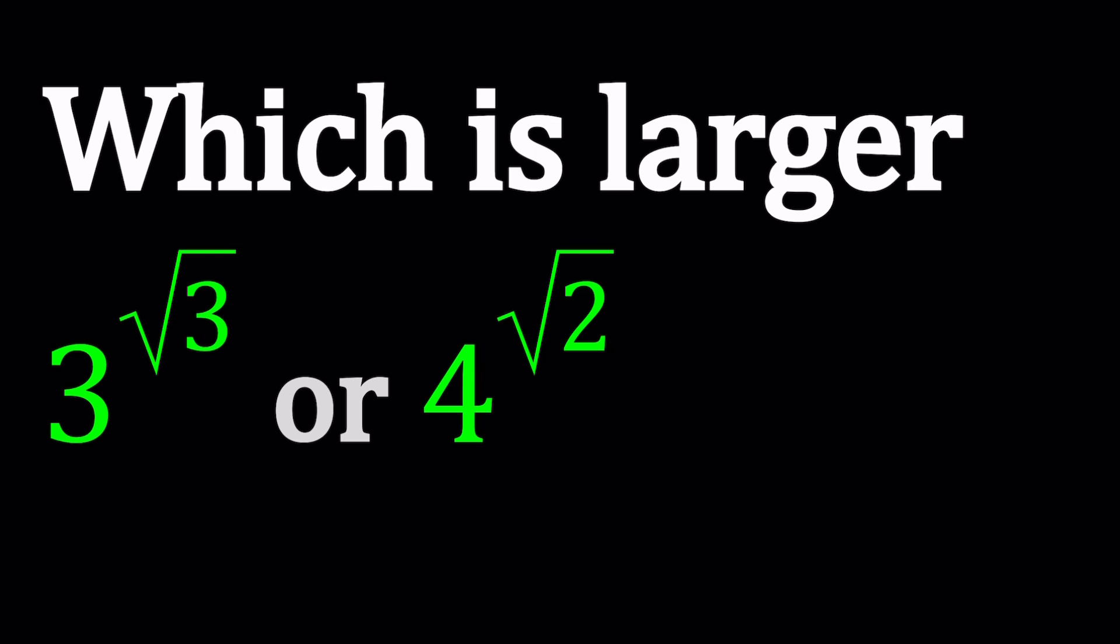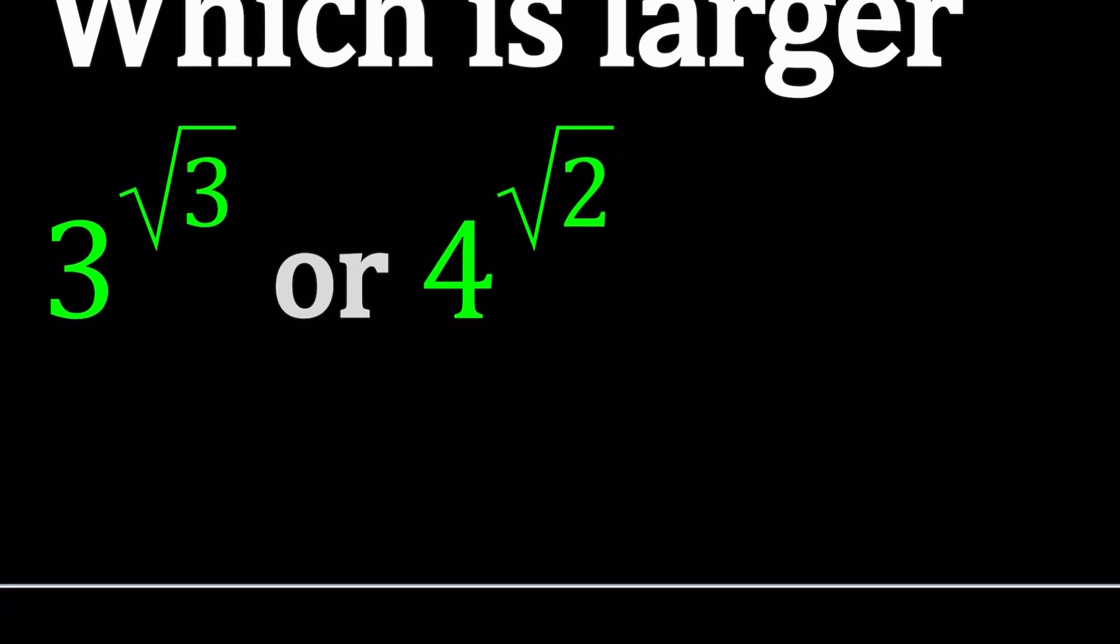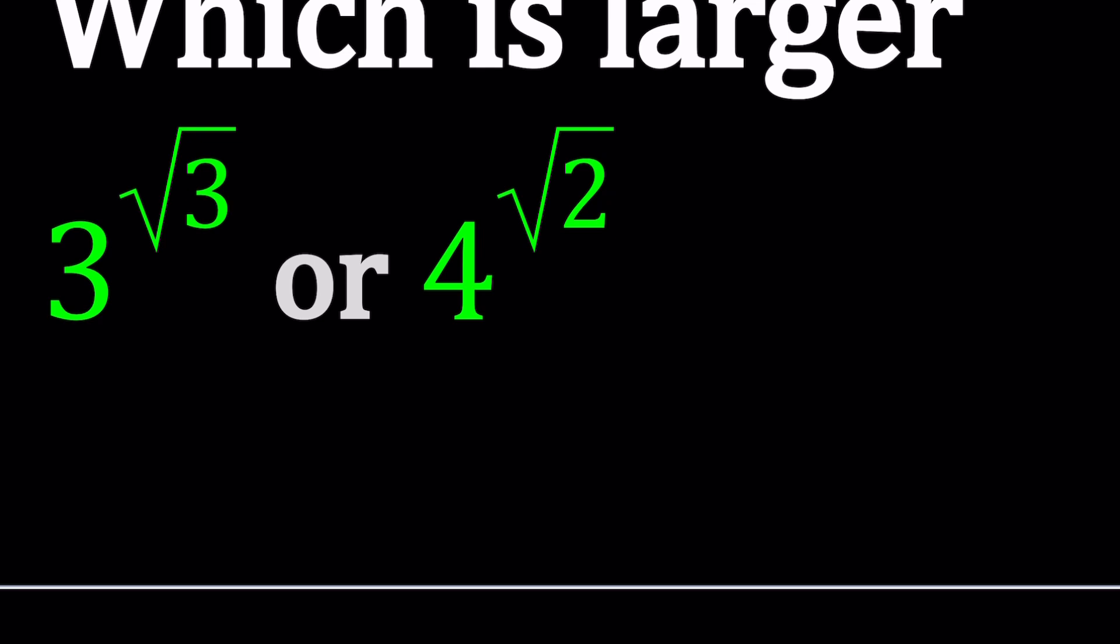So here is how we start. First of all, I want you to notice that the exponents are irrational. So let's go ahead and get rid of one of them. How can we do that? Well, just pick one. For example, you can say okay, I'm going to get rid of this number. That's another good question: we have an irrational number to an irrational power but the result is rational. Here's the answer: you raise it to the power root 3, root 3 times root 3 becomes a 3. This becomes 3 to the third power, which is 27.